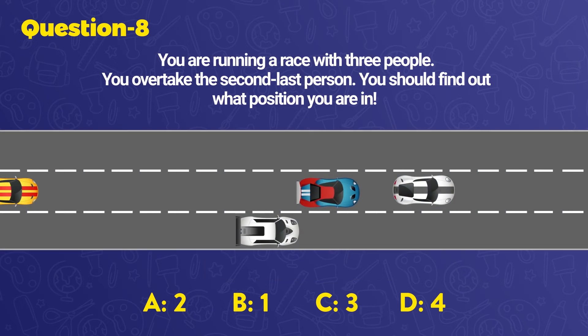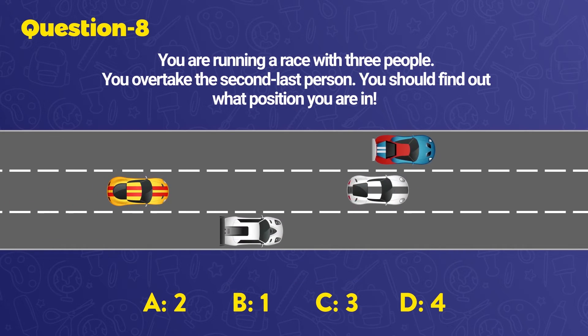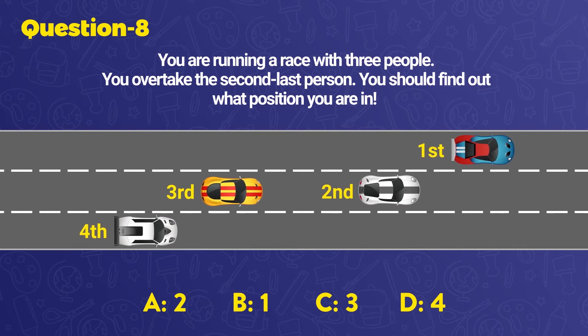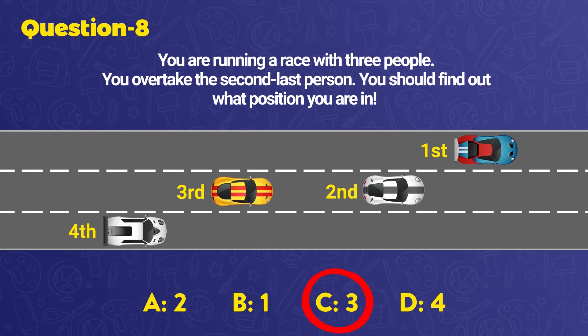Let's explain. You are running a race with three other persons, which means the total number of people running in this race is 4, and you passed the second last person, namely the third. Now, you are in the third position, so the right answer is C.